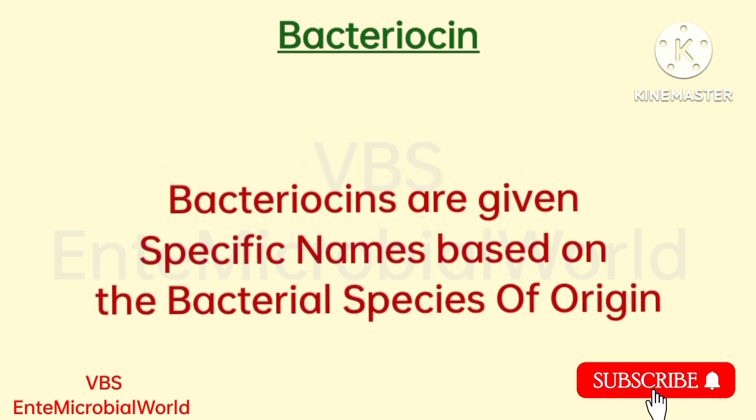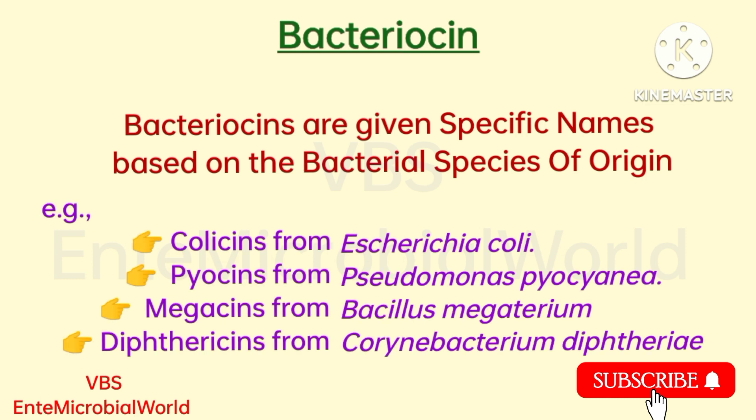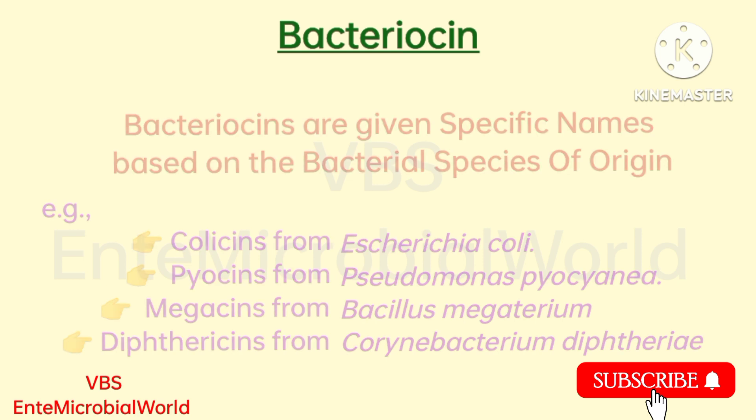Bacteriocins are given specific names based on the bacterial species of origin. For example, Colicins, Pyocins, Megacins, etc.